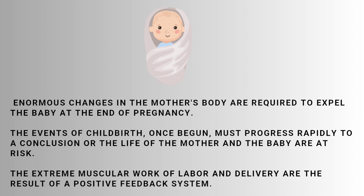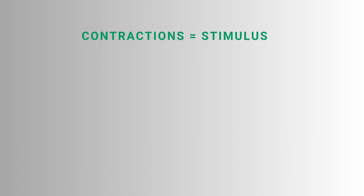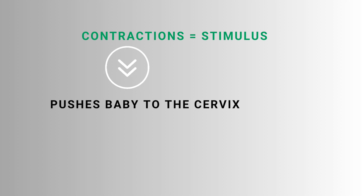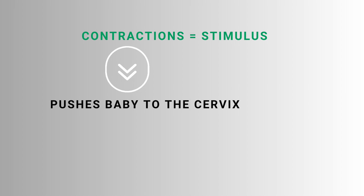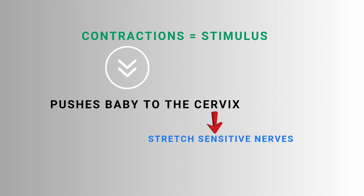Like negative feedback mechanism components — stimulus, sensors, effectors — we also see these in childbirth. First, contractions arrive as a stimulus. These contractions push the baby toward the cervix, the lower part of the uterus. When contractions arrive, the baby is pushed to the cervix. This is the stimulus. In the cervix, there are stretch-sensitive nerve cells.